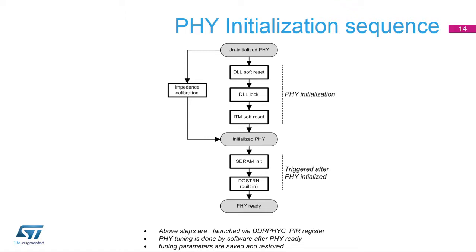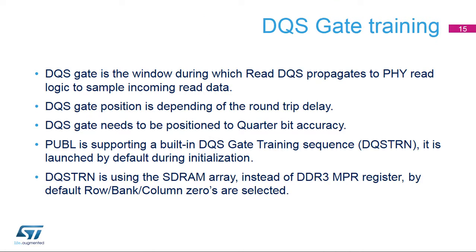The complete PHY initialization, including SDRAM initialization and DQSTRN, is shown in this diagram. The sequence is defined and controlled by the PIR register and is launched after a system reset. Tuning parameters determined by software during bring-up are saved and restored. The DQS gate is the window during which read-DQS propagates the PHY read logic to sample incoming read data. DQS gate position is dependent on the round-trip delay and needs to be positioned to quarter-bit accuracy. PUBL supports a built-in DQS gate training sequence, or DQSTRN, launched by default during initialization.